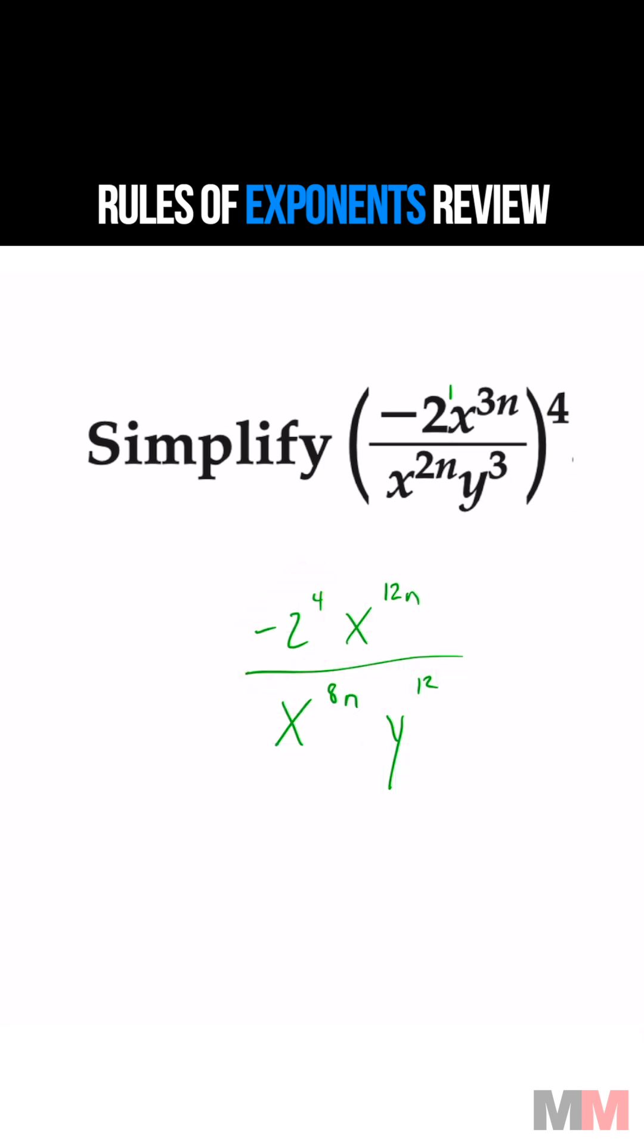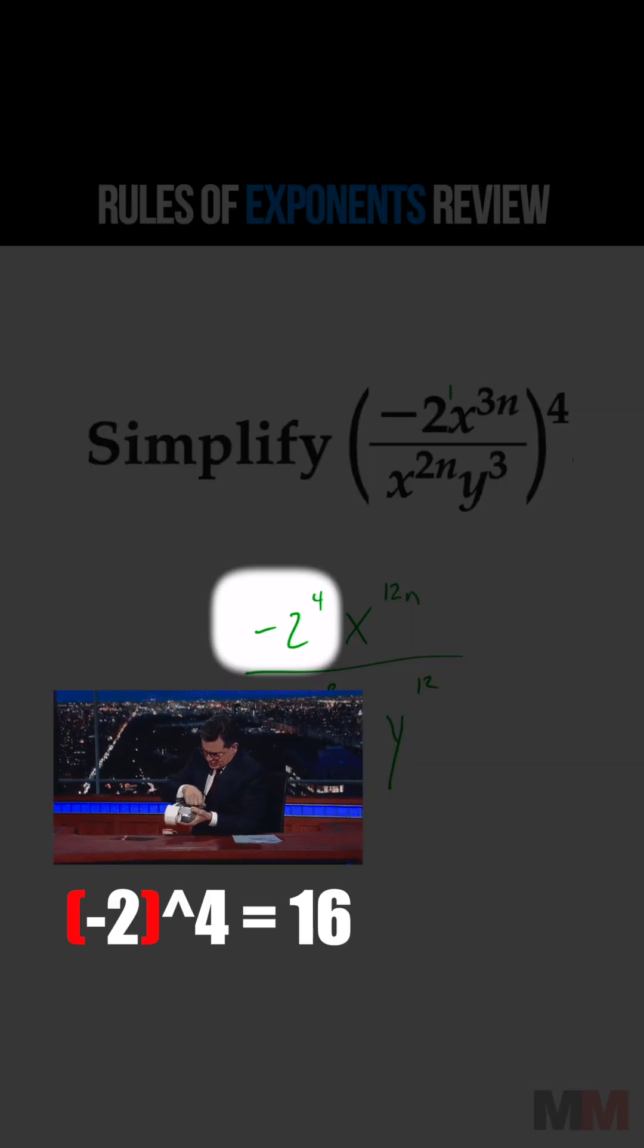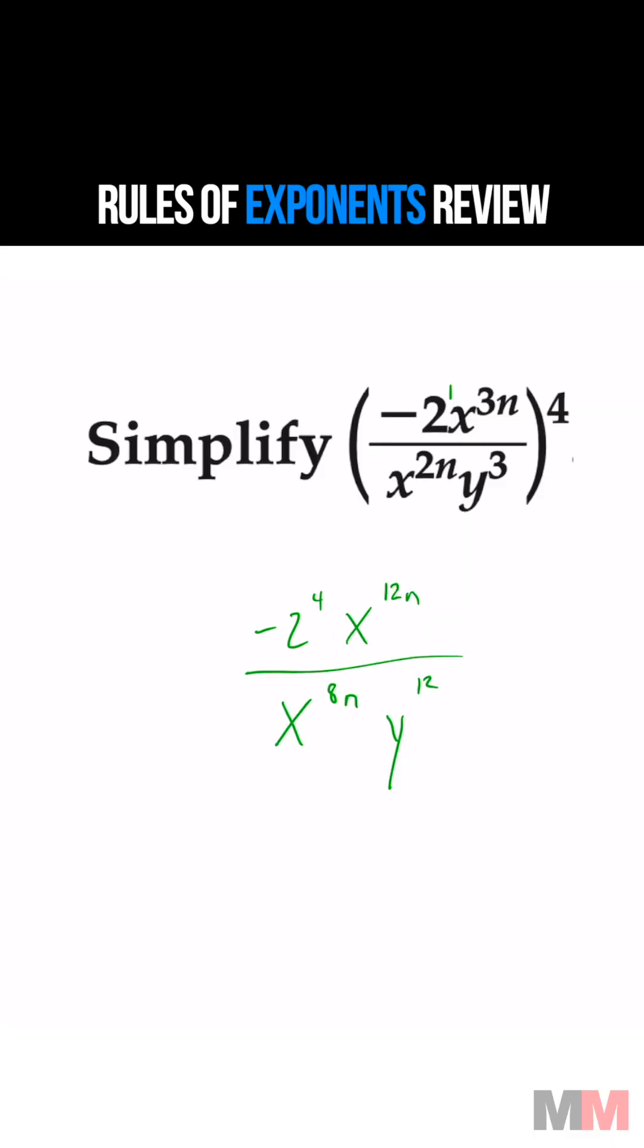Let's focus on the number first. All you have to do is compute negative two to the fourth power. If you're using a calculator, use parentheses because some calculators are a little weird. Negative two to the fourth is 16, and we're going to leave that on the top. I like to cross it off as I go.